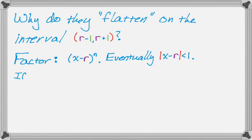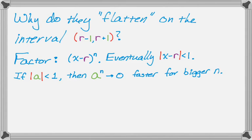Eventually, the absolute value of x minus r is going to be less than 1. It's all about raising numbers that are less than 1 to higher and higher powers. If the absolute value of a is less than 1, so I'm calling x minus r a, then a to the n will go to 0 faster for larger values of n. If n is bigger, you're going to get a smaller number out of a to the n.